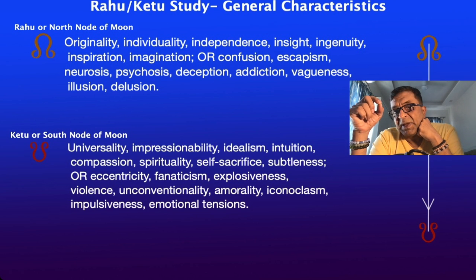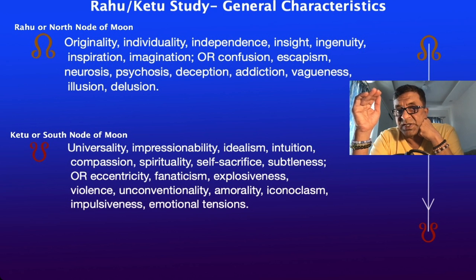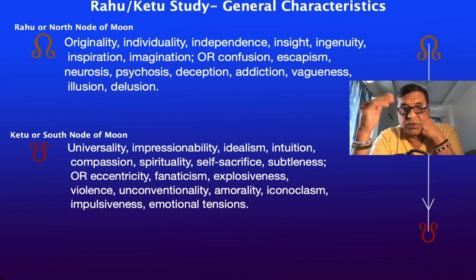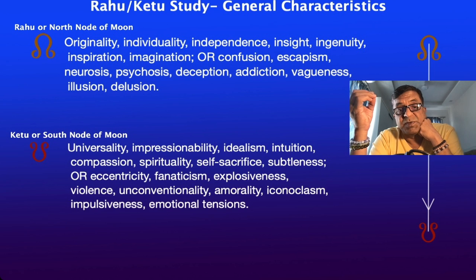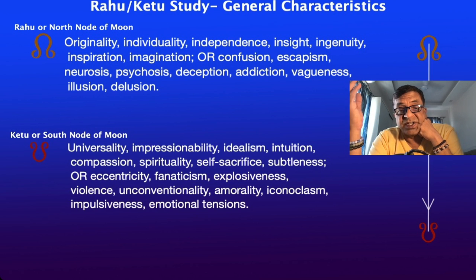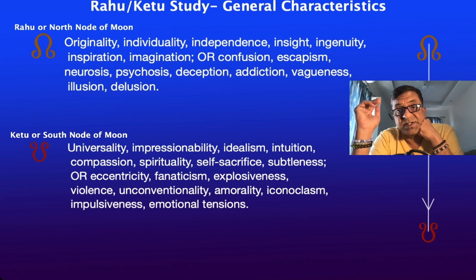On the downside, Rahu leads to confusion, escapism, neurosis, psychosis, deception, addiction, vagueness, illusion, and delusion. Ketu, the guy with only the body and no head, gives us the feeling of universality, impressionability, idealism, intuition, compassion, spirituality, self-sacrifice, and subtleness on the positive side. On the downside, it can lead to eccentricity, fanaticism, explosiveness, violence, unconventionality, amorality, iconoclasm, impulsiveness, and emotional tensions.